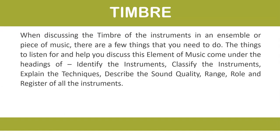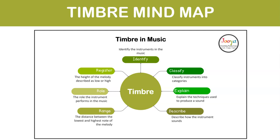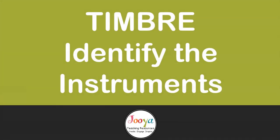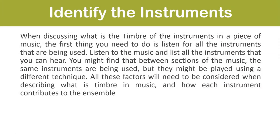When discussing the timbre of instruments in an ensemble, there are a few things you need to do. These come under the headings of: identify the instruments, classify the instruments, explain the techniques, describe the sound quality, and then consider the range, role, and register of all the instruments. Identify is the most important — you need to identify the instruments, then classify them into categories. Explain means explain the techniques used to produce a sound. Describe how the instrument actually sounds. Range is the distance between the lowest and highest note. Role is the role the instrument performs. Register is the height of the melody, described as low or high.